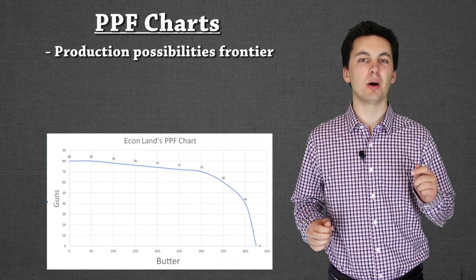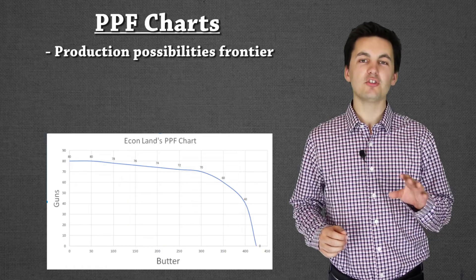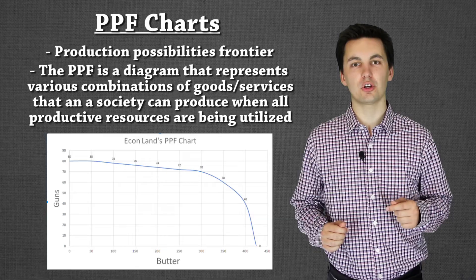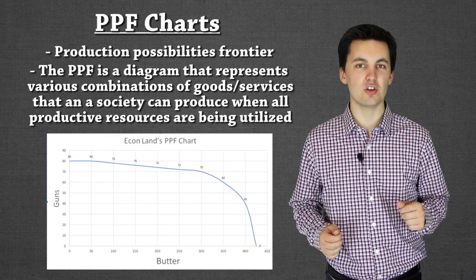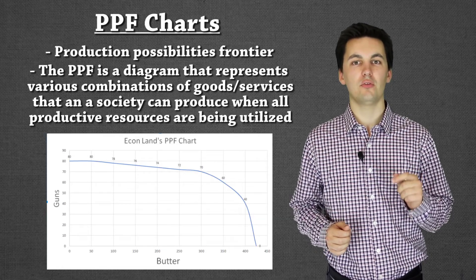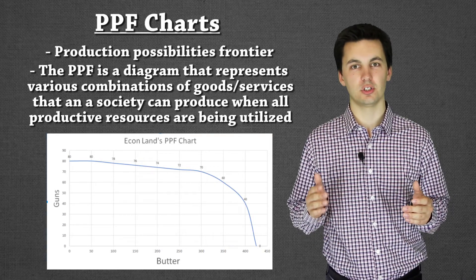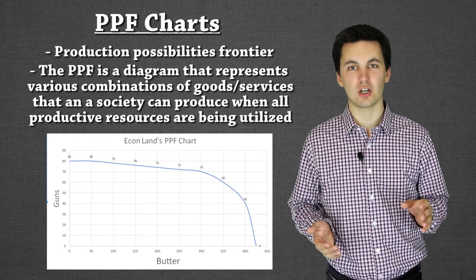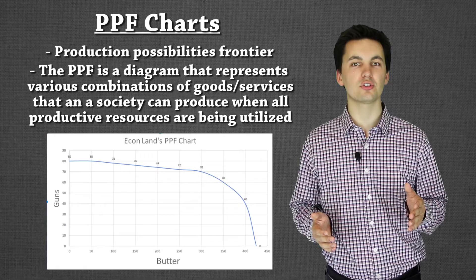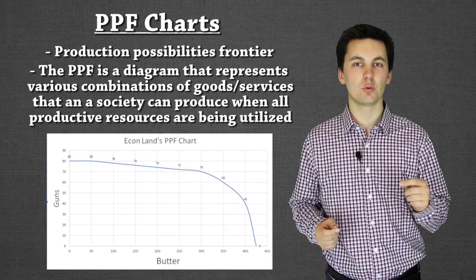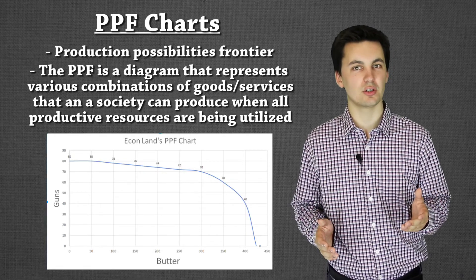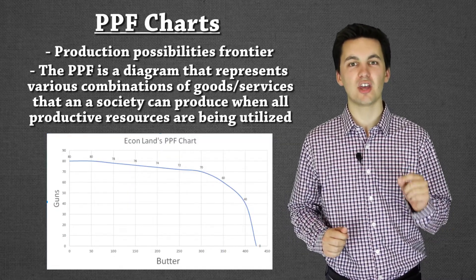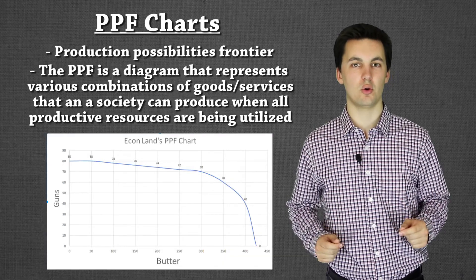A PPF chart stands for the Production Possibilities Frontier. What it shows us is combinations of output between two different goods that we as a society or even an individual could produce if all of our resources are being maximized and fully utilized. This will get us into why we trade as a country and why it's so important to understand what we're doing with our resources. Let's go into what a PPF chart looks like and break down exactly how to interpret and understand it.